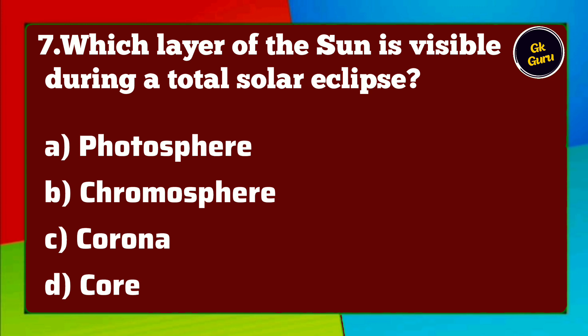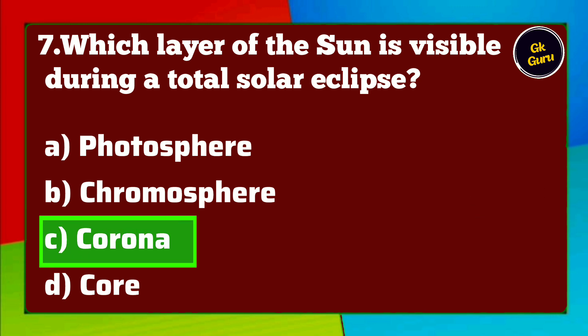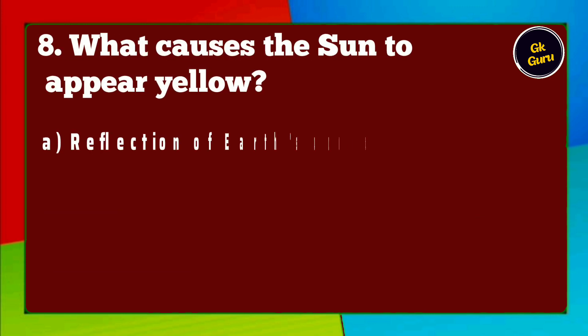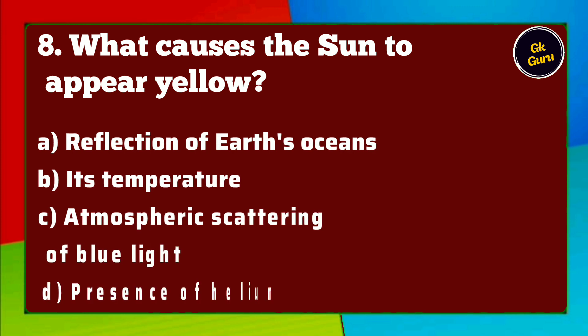Which layer of the sun is visible during a total solar eclipse? A. Photosphere B. Chromosphere C. Corona D. Core. Answer C. Corona.